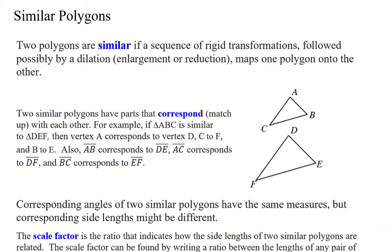So two polygons are similar with a sequence of rigid transformations followed possibly by a dilation where you enlarge the shape or you reduce it in size, map one polygon onto another. So that's a definition there. It has to be true that there has to be a series of these rigid transformations that'll map one to the other and possibly scale it.